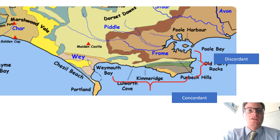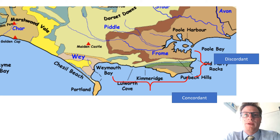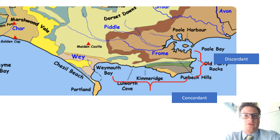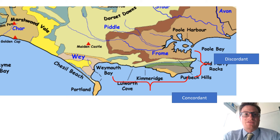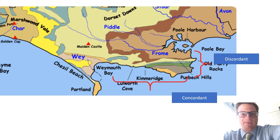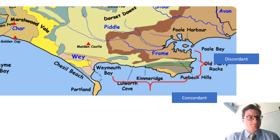Concordant coastlines are more complex in nature. The classic example of this is around Lulworth in Dorset, which you can make out on this map. Geological strata run parallel to the coast, but they vary in terms of their resistance to the sea.